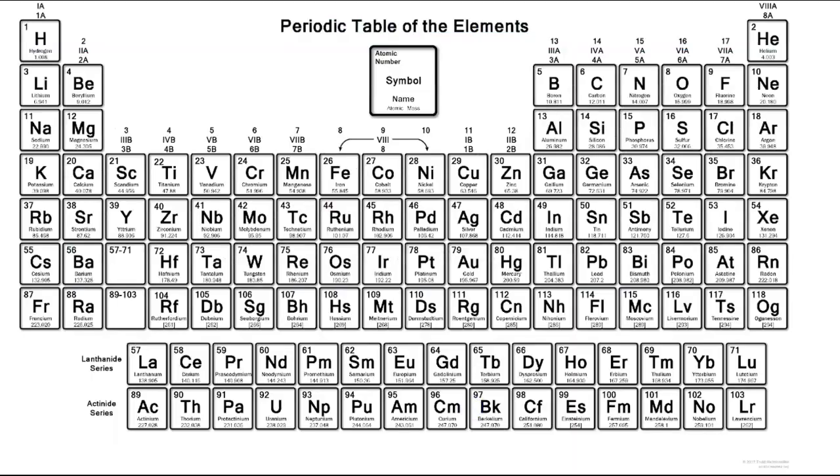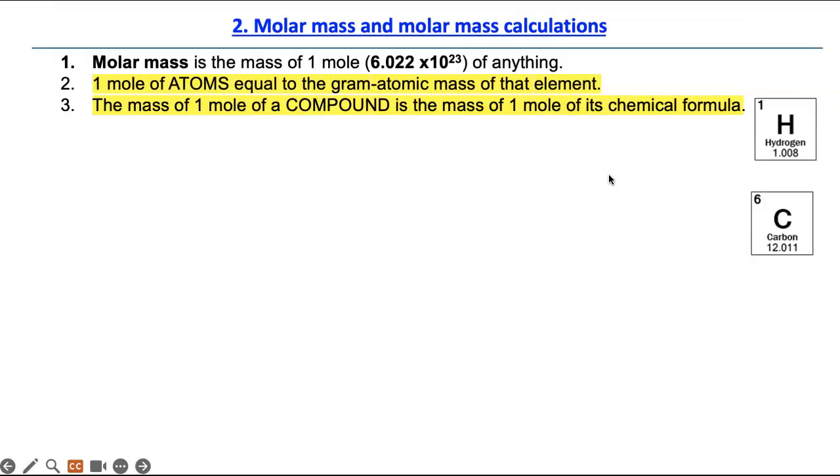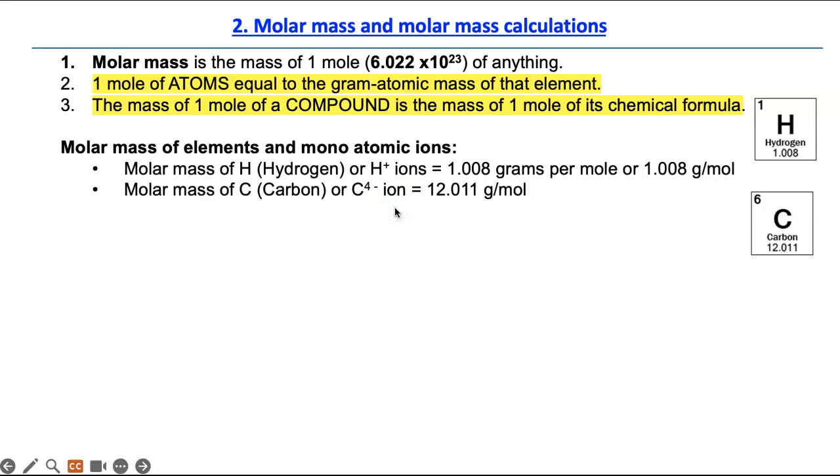So remember when you look at the periodic table, the masses for each of the elements is also equal to the molar mass of that element stated in grams. So a mole of hydrogen is 1.008 grams per mole, and that has 6.022 times 10 to the 23 atoms of hydrogen, and the same for everything else. Second topic is molar mass and molar mass calculations. I would like you to draw these boxes and write this down.